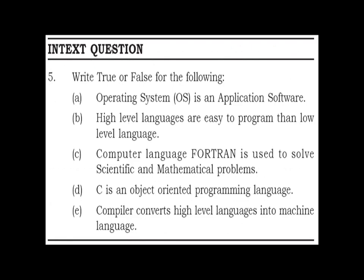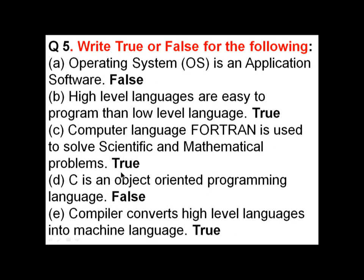In-text question 5: Write True or False for the following. A. Operating system is an application software. B. High level languages are easier to program than low level languages. C. Computer language Fortran is used to solve scientific and mathematical problems. D. C is an object-oriented programming language. E. A compiler converts high level languages into machine language.